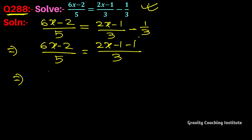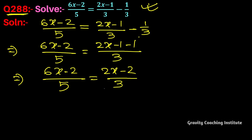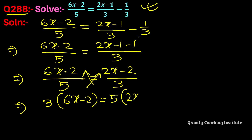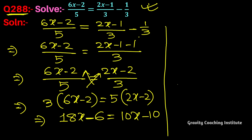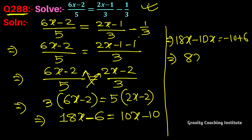It implies that by cross multiplication we get 8x equal to minus 4, so therefore x equal to minus 4 divided by 8.